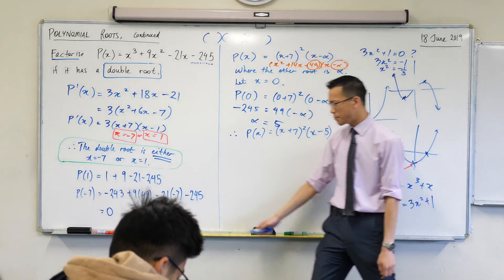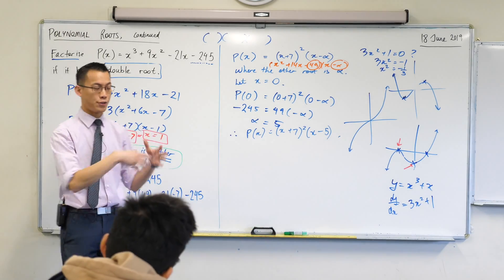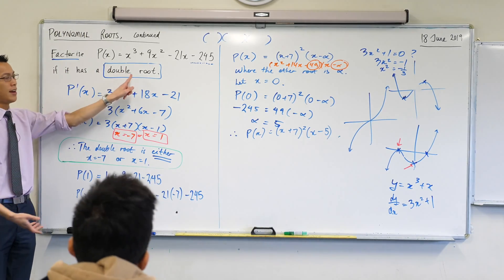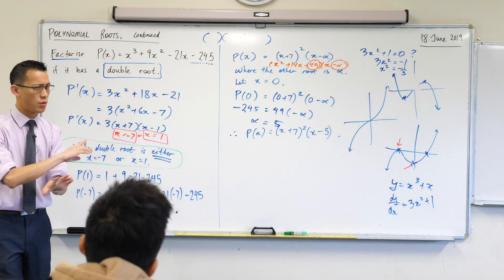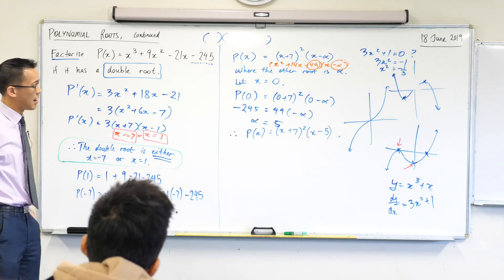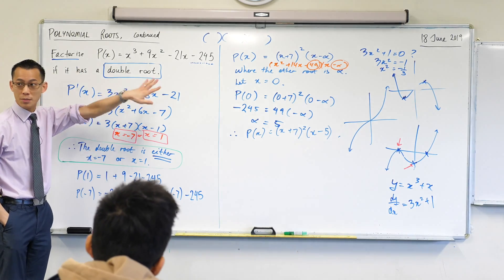So it takes a bit more thinking, but actually much less working if you end up cleverly using some of your facts about calculus and double roots, okay? Does anyone have any questions on this? Were there any points at which you're like, no, I missed the leap of logic, and it was a bit confusing?